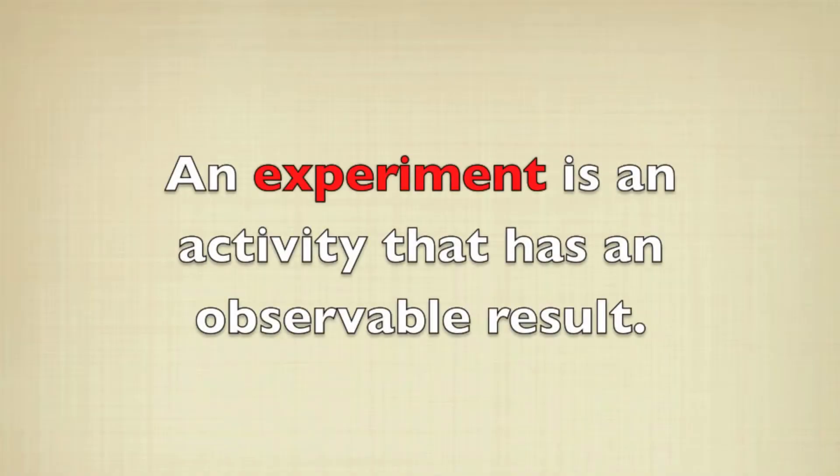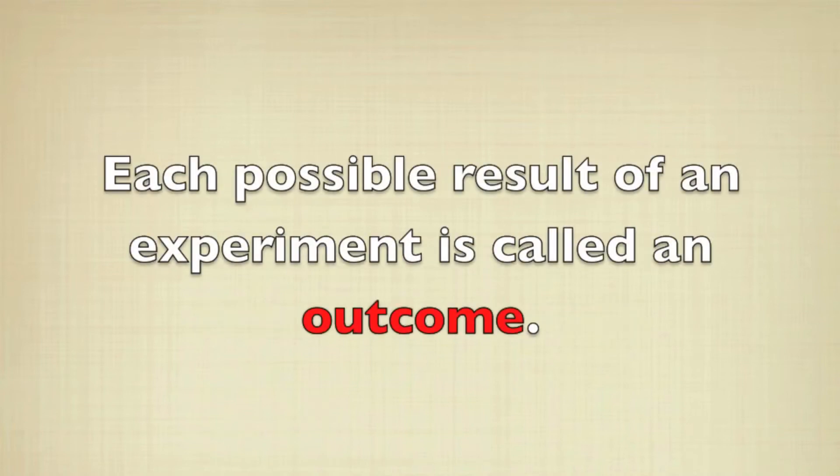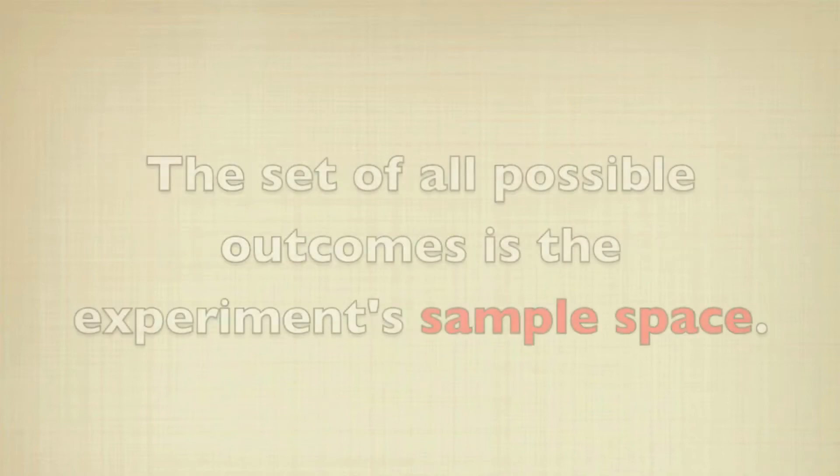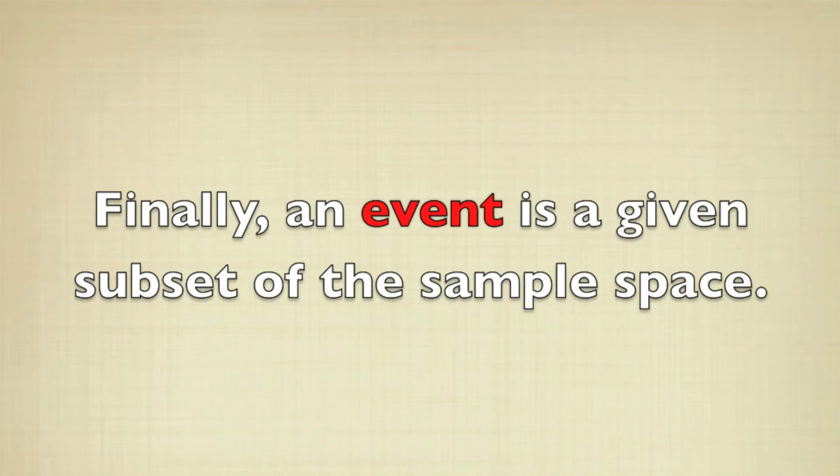An experiment is an activity that has an observable result. Every possible result of the experiment is called an outcome. The set of all possible outcomes is the experiment's sample space. Finally, an event is a given subset of the sample space.